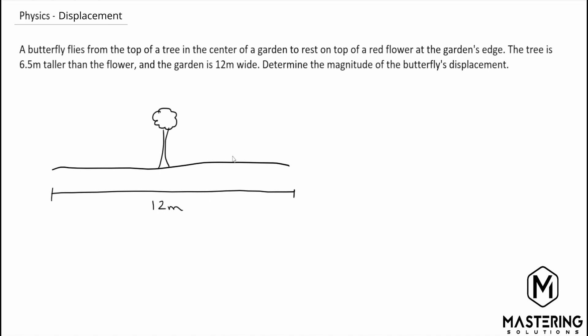They say that a butterfly starts out right up here on the top of the tree and then it flies down to a little flower at the very edge of the garden. So then they want to know what is the magnitude of the displacement that the butterfly went to land on the little flower.